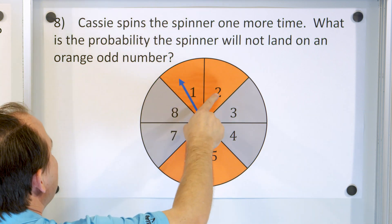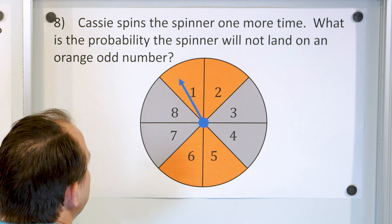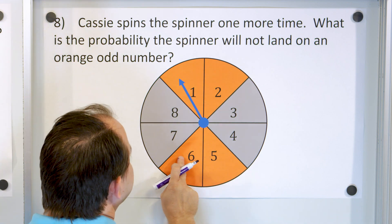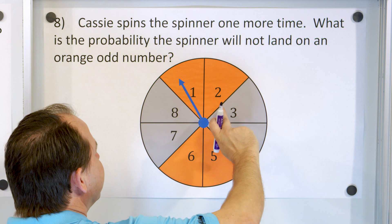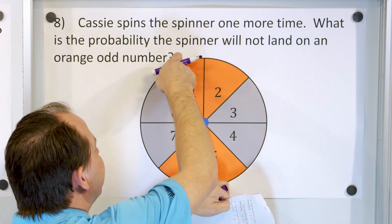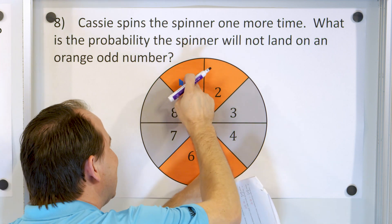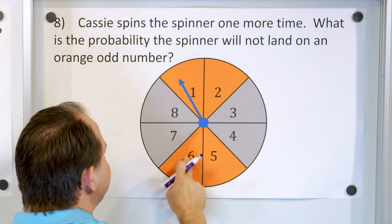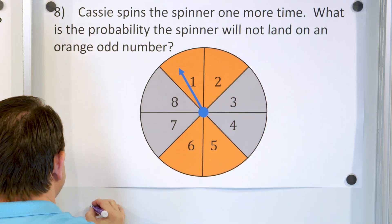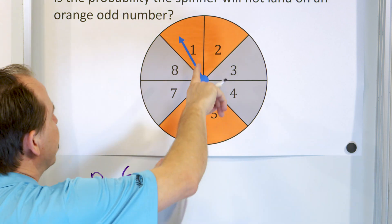What is the probability the spinner will not land on an orange odd number? The orange odd numbers occupy two positions. We're asking what is the probability we will NOT land on these, so we count all the other positions: there are six positions we can land on out of a total of eight, since the two orange odd ones are excluded.